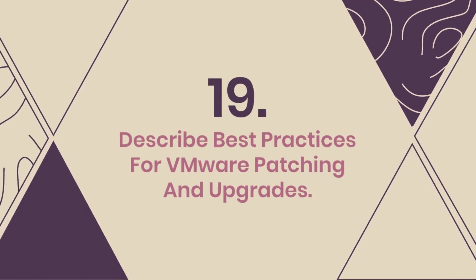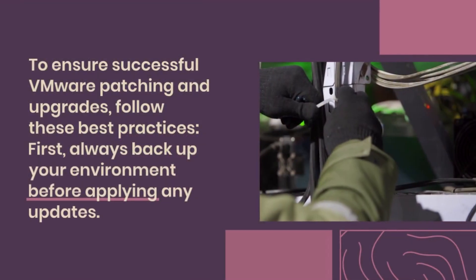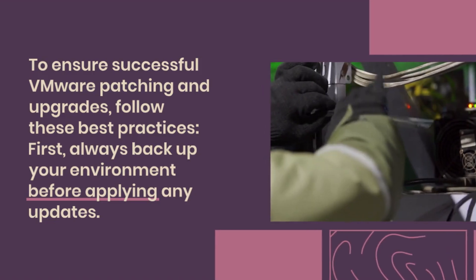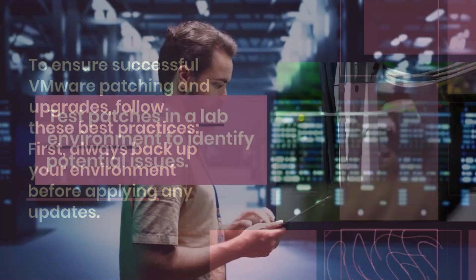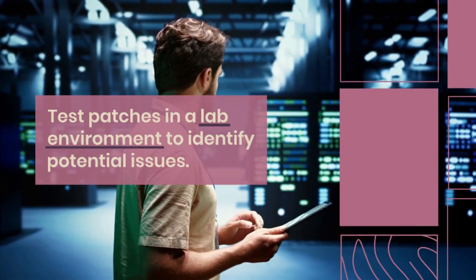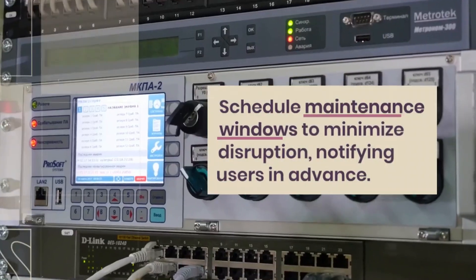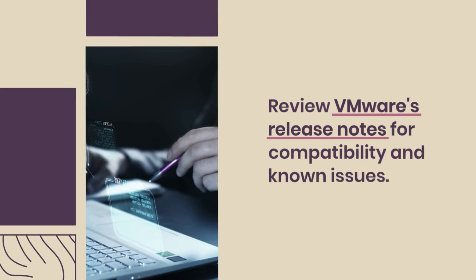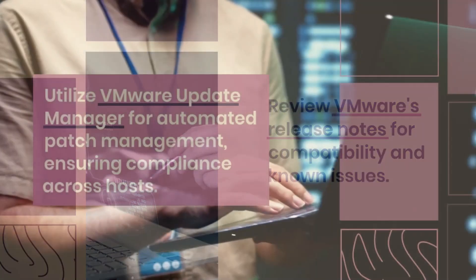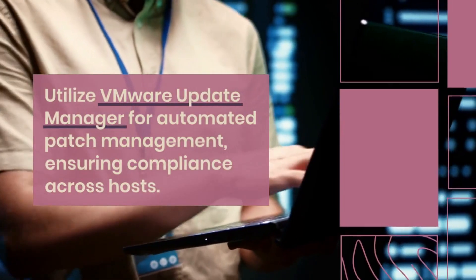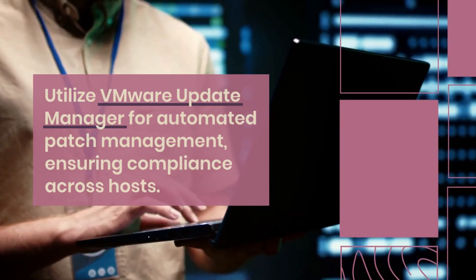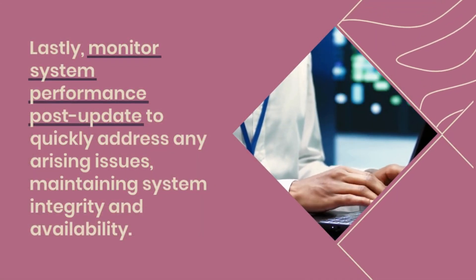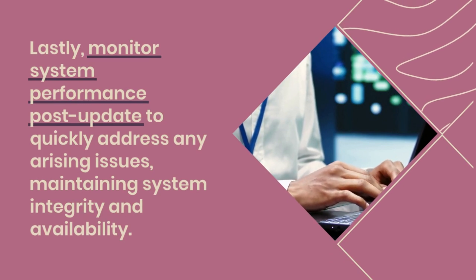Question 19: Describe best practices for VMware patching and upgrades. To ensure successful VMware patching and upgrades, follow these best practices. First, always back up your environment before applying any updates. Test patches in a lab environment to identify potential issues. Schedule maintenance windows to minimize disruption, notifying users in advance. Review VMware's release notes for compatibility and known issues. Utilize VMware Update Manager for automated patch management, ensuring compliance across hosts. Lastly, monitor system performance post-update to quickly address any arising issues, maintaining system integrity and availability.